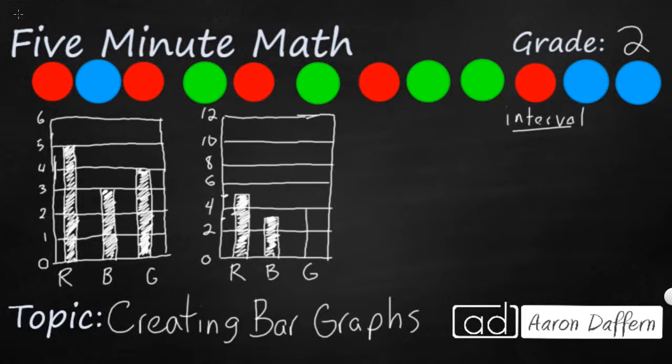But right here, there's my green. So my numbers are still the same. I still have five and three and four, just like on the other one. But changing the interval changes the size of the bar graph.